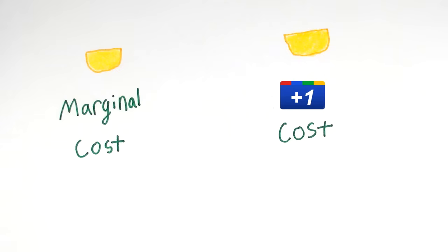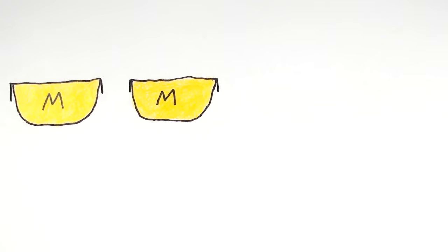Since margarine is usually sold in units of one tub, we would be talking about the cost of one more tub of margarine. But let's say you have three tubs of margarine. Which one is the marginal margarine? Well, the answer is the next one.